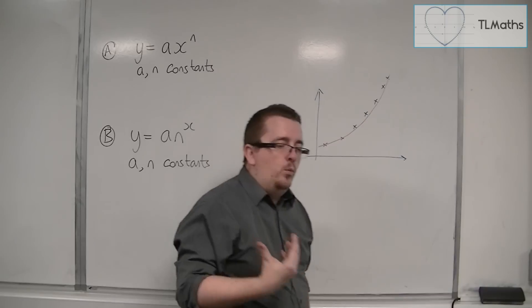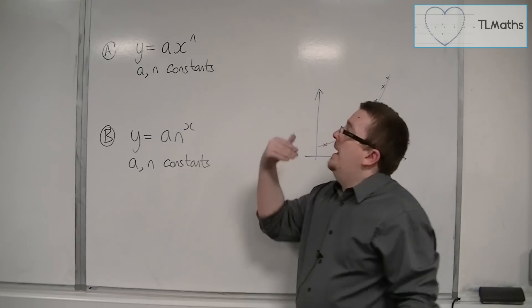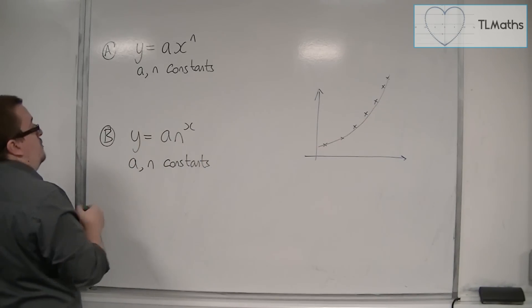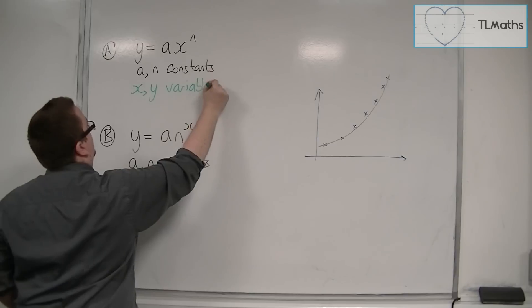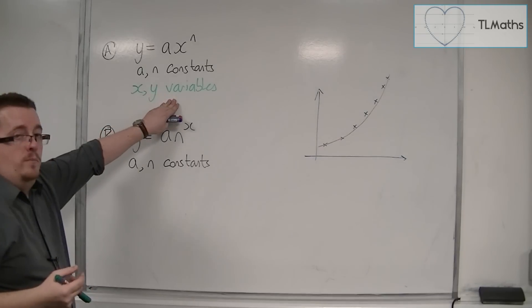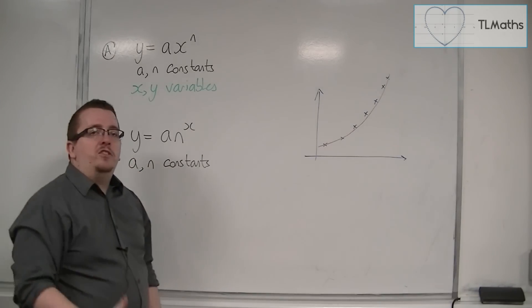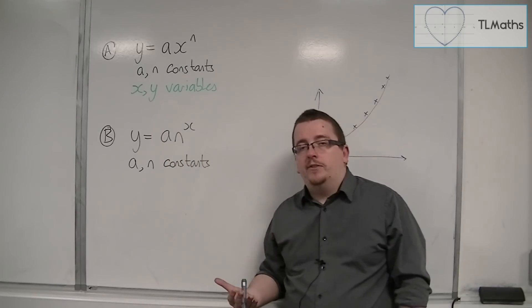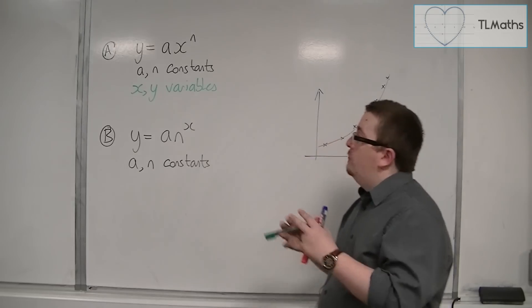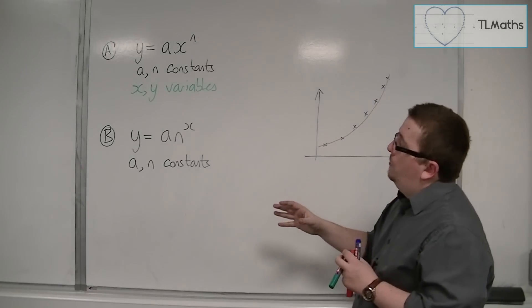They are numbers that we want to find. So if a and n are constants, x and y are variables. They are variables because they vary. In equations, you have constants and you have variables. Constants are the numbers like 2 or minus 3 or 5, and you could also represent them with letters, like the constant of integration when we get round to that bit. So a and n are constants, x and y are variables.